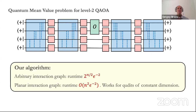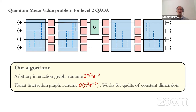The runtime of our algorithm depends on the interaction graph. For general graphs, the runtime is exponential but only two to the n over two — compared to brute-force simulation with runtime roughly two to the n, we have a square root speedup. In the special case where the interaction graph is planar, our algorithm has polynomial runtime.